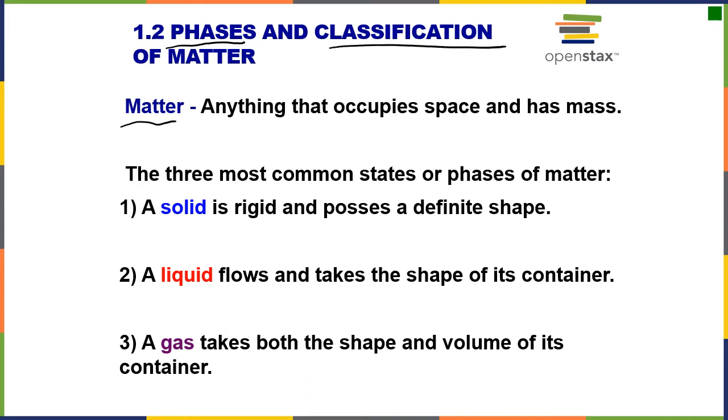Matter is anything that occupies space and has mass. We have three common states or phases of matter - we use these terms interchangeably. A solid is rigid and possesses a definite shape, so any solid has a definite shape and volume.